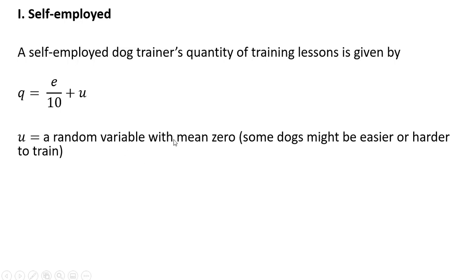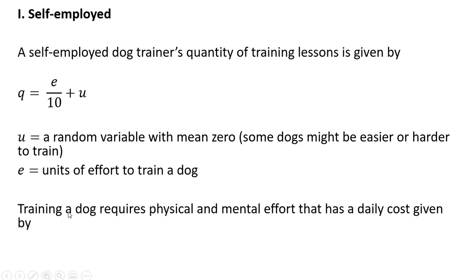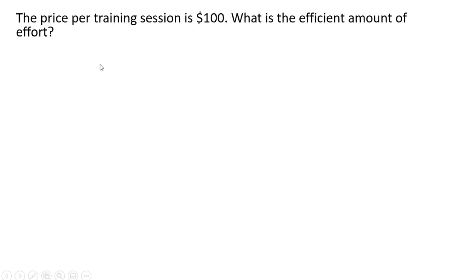But again, on average, U has a mean or average of zero. E represents units of effort to train a dog. Training a dog requires physical and mental effort that has a daily cost given by the following equation. So providing effort is costly. The price per training session is $100. What is the efficient amount of effort?